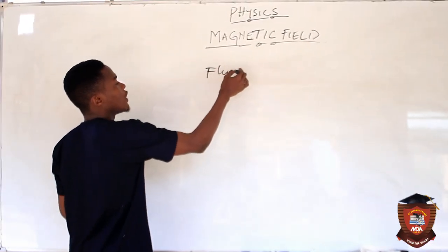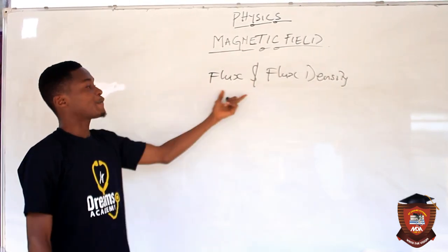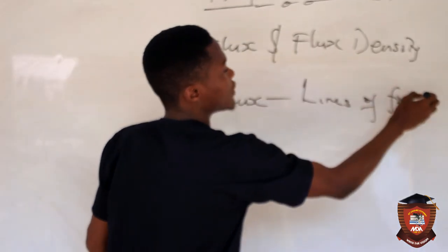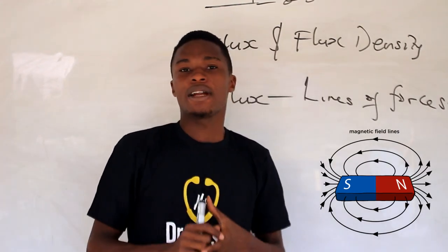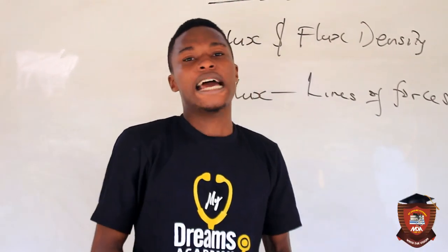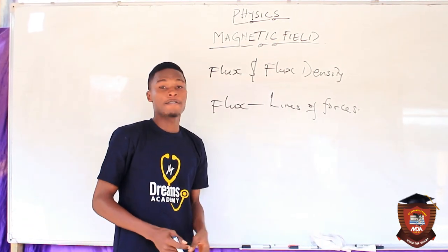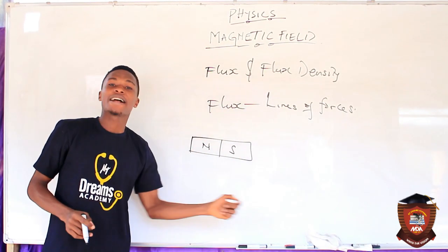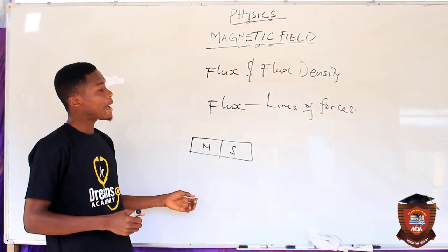Now let's talk about the concept of flux and flux density. Flux simply represents lines of forces. Lines of forces are imaginary lines we draw in a field — whether magnetic, electric, or electromagnetic — to tell us the direction of that field at any given point in time.